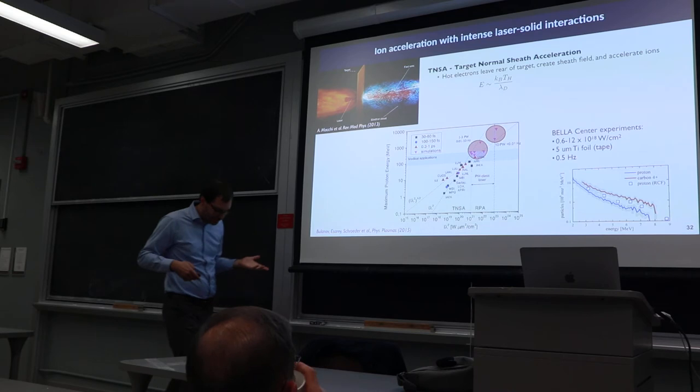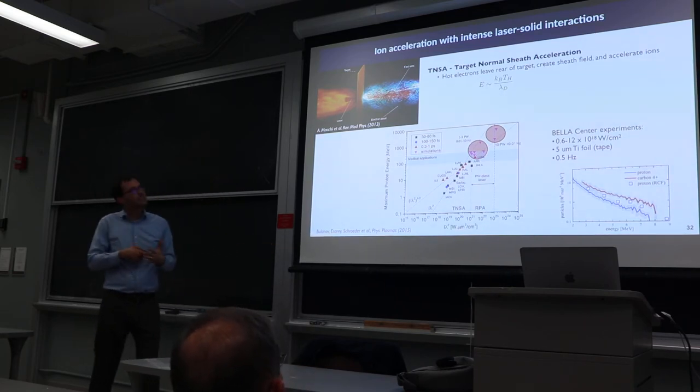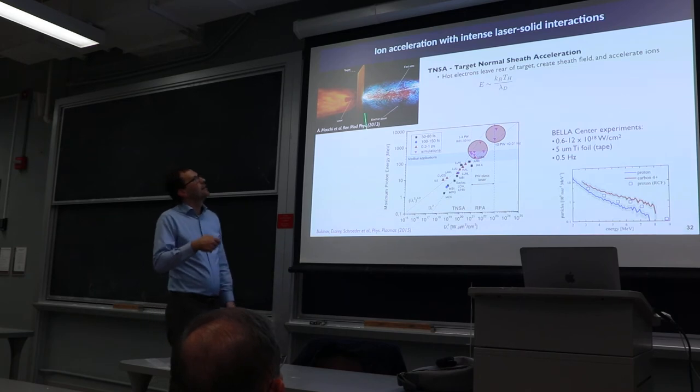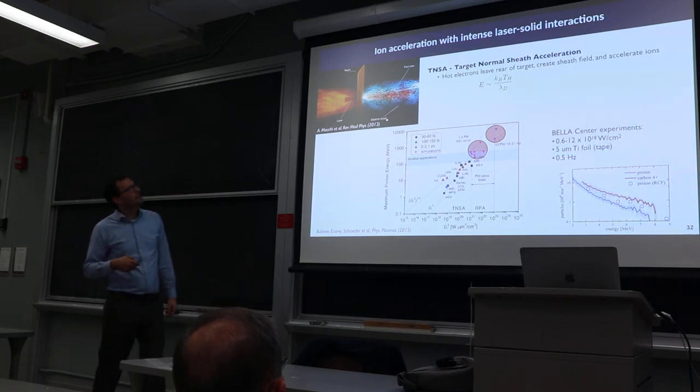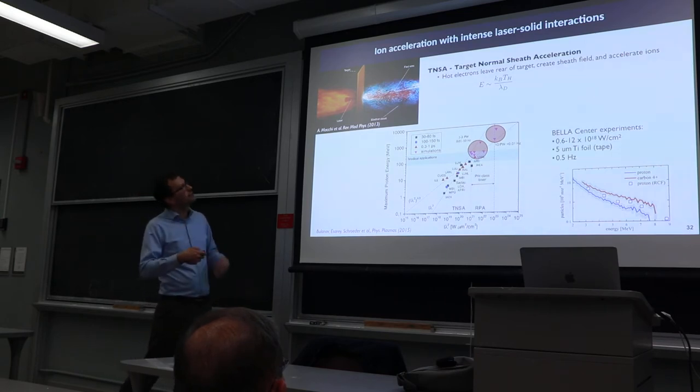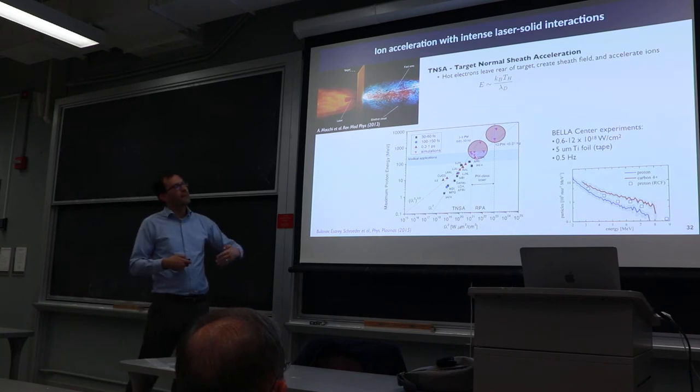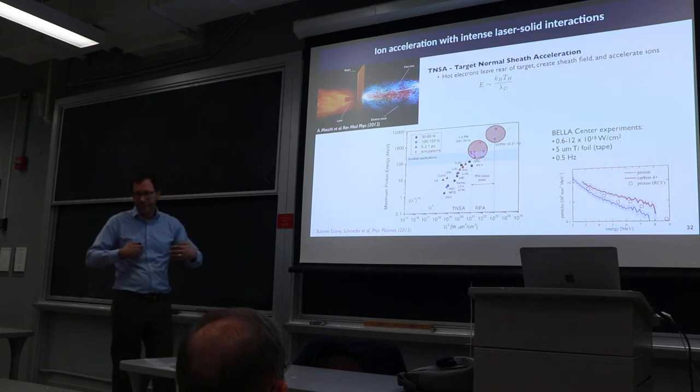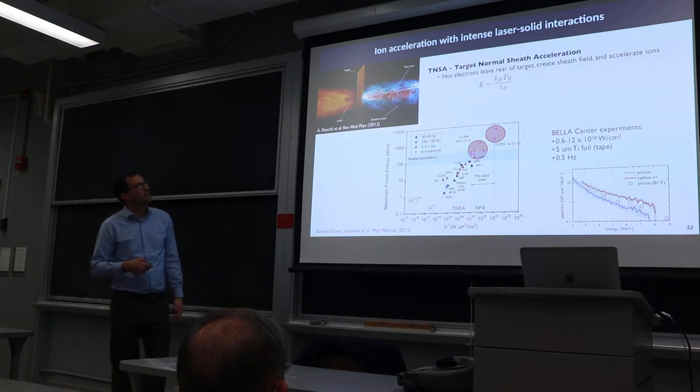I quickly want to mention that you can also accelerate ions with laser plasma interactions. You do this by interacting an intense laser on a solid target. What happens is you generate hot electrons and they escape the target and form a sheath. This sheath field then accelerates ions off the surface of this solid target. We've done these experiments.